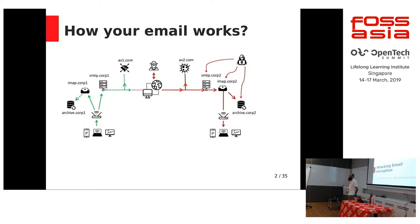Your email then goes to the antivirus server. Antivirus software actually needs to see the content of your email in order to figure out if there is a virus inside, so most likely the antivirus server may not be trusted. The email goes out to the internet, where the guy in the hoodie — the attacker — is able to see the packets going through the internet and see what you have typed in your email.